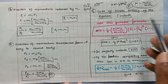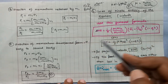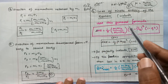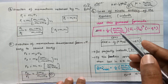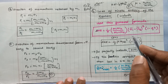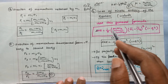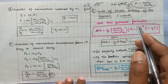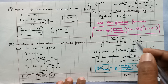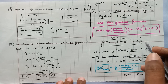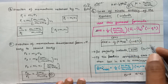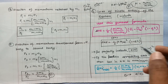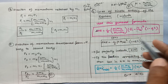This covers different types of problems in collision. There are two more types of problems: floor ball collision and ballistic pendulum. We will see those problems in the next video.